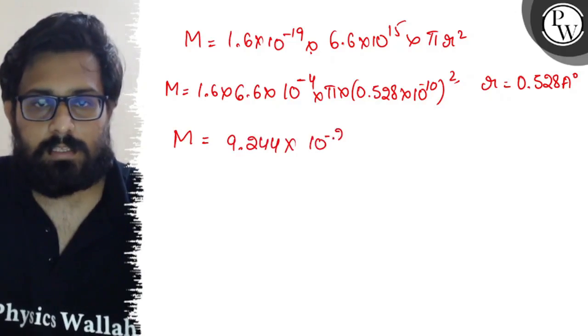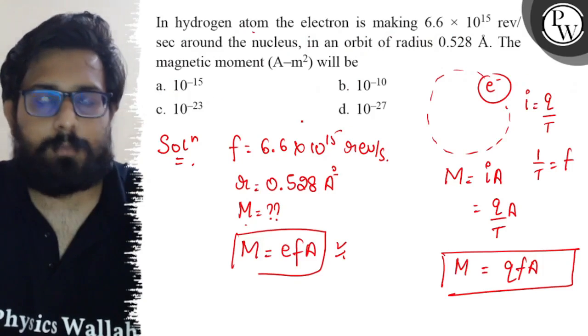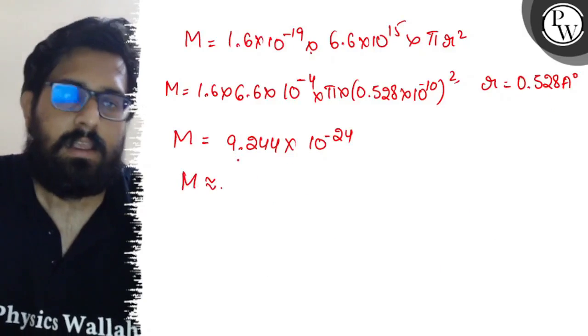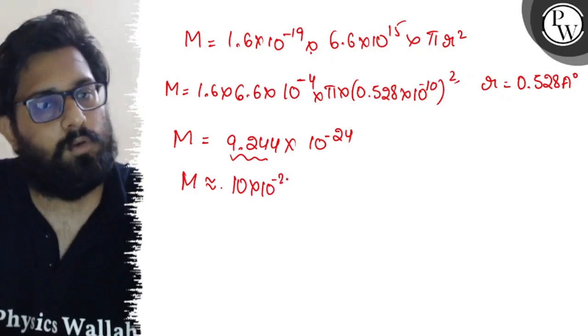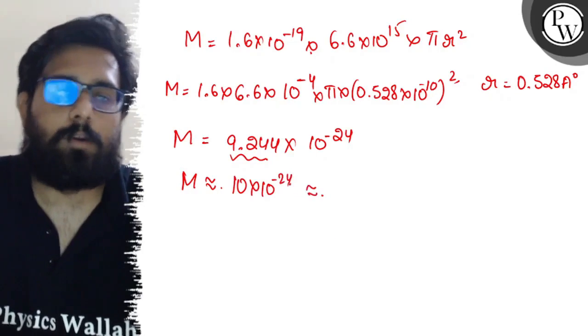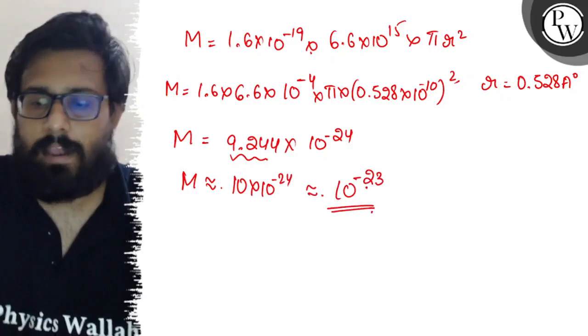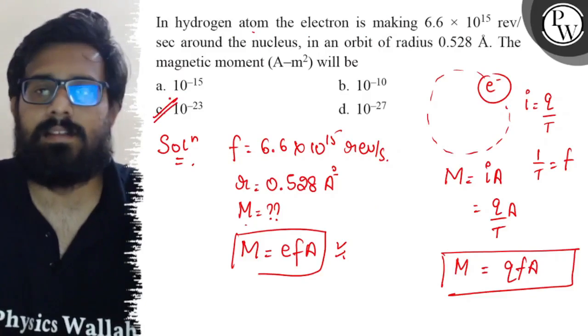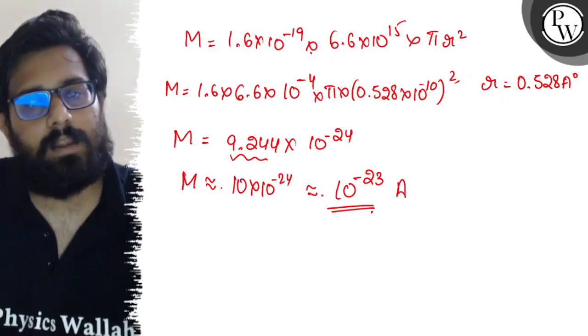Let's see the options. The options give only the power, so this can be written as approximately 9.244 × 10^-24, which can be written as approximately 10^-23. So this is our answer, 10^-23. I get option C, and hence option C is absolutely correct. The unit for this is ampere meter square.